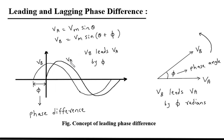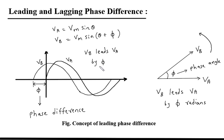The equation for Va is: Va = Vm sin(theta), and the equation for Vb is: Vb = Vm sin(theta + Phi), where Vm is the maximum voltage. Here we can see the phase difference is positive, that is plus Phi. So we can say that Vb leads Va by Phi.